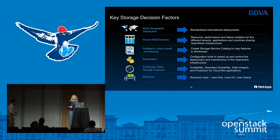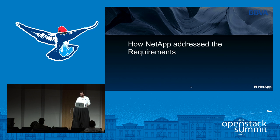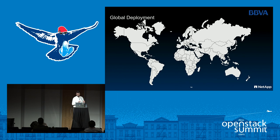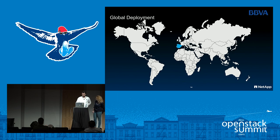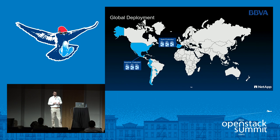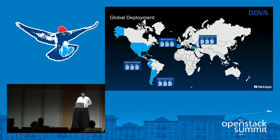Peter Holcomb from NetApp professional services in Spain will explain how NetApp is addressing those requirements. BBVA is a global entity wanting a global OpenStack, so they created a building block approach — a fully automated, homogeneous OpenStack region. They first built their OpenStack region in Madrid, Spain, fine-tuned their building block, then deployed it to Mexico. Mexico covers multiple countries within one single OpenStack region. Now they are also deploying to Turkey, and in future Argentina and other countries.